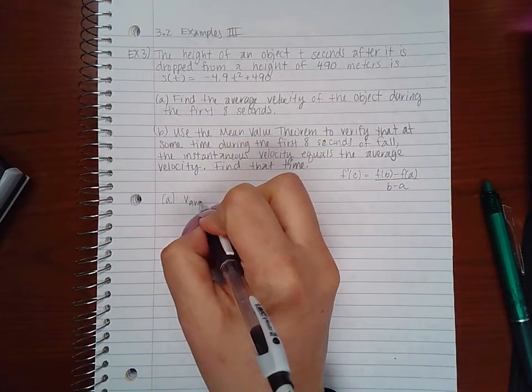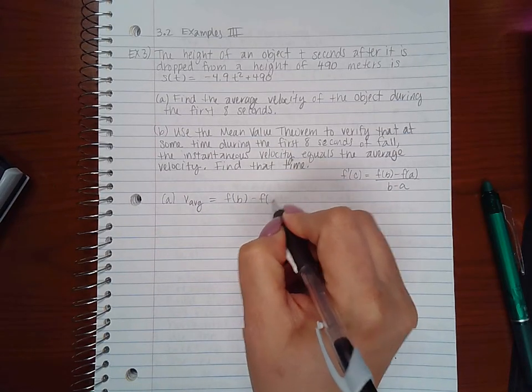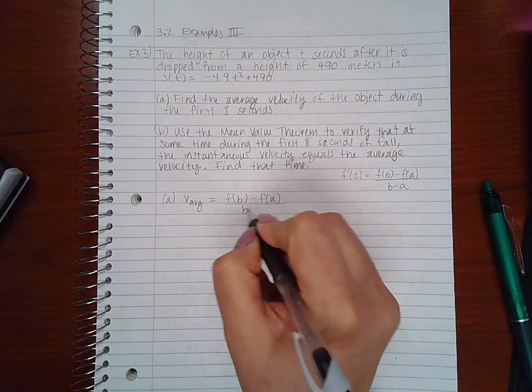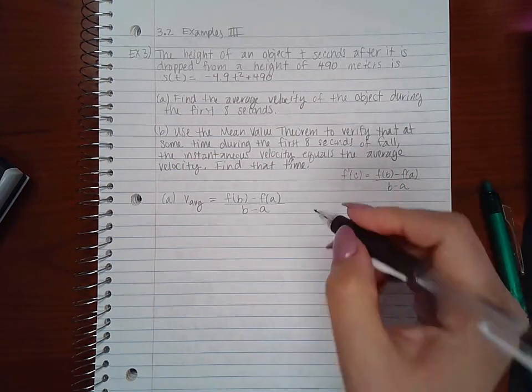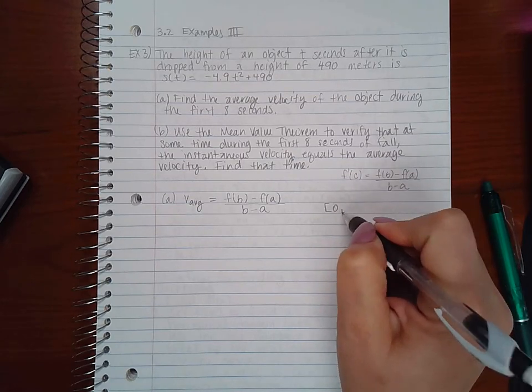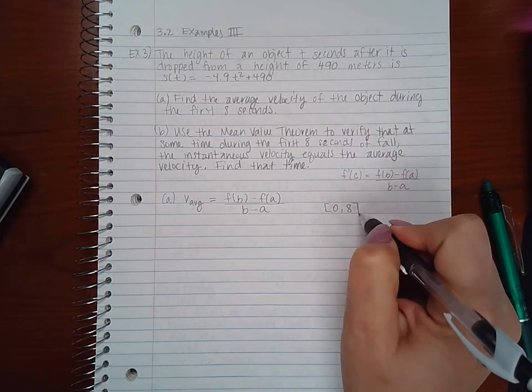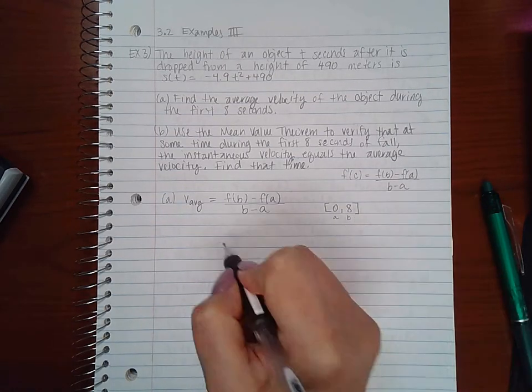So for part (a), we need to find the average velocity. That's going to be, like I stated earlier, f(b) - f(a) over b - a. Now we need to know what a and b are, our interval. If we're talking about the first 8 seconds, we're talking about from 0 to 8, which means my a is 0 and my b is 8.